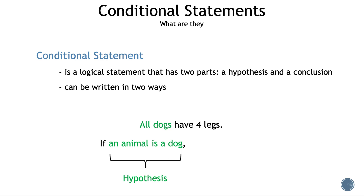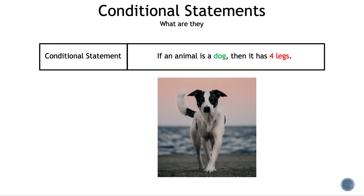'An animal is a dog' is our hypothesis. Now let's rewrite the object 'four legs' as 'it has four legs,' and put it after the word 'then.' 'It has four legs' is our conclusion. Let's make a table so we can see what is happening more easily. Our conditional statement is: if an animal is a dog, then it has four legs.